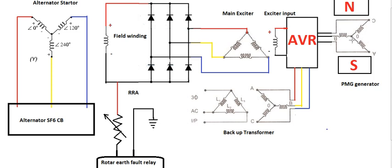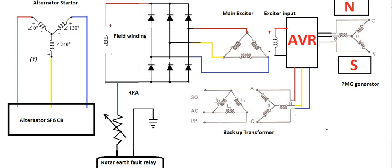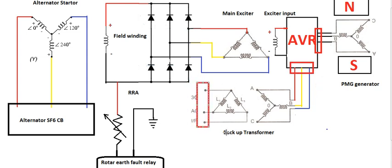So we can have the AVR. We will explain what the AVR is. If your PMG fails, we are not relying on the PMG. So this is a backup generator. This is a backup transformer — we have a step-down transformer. This is the grid voltage.